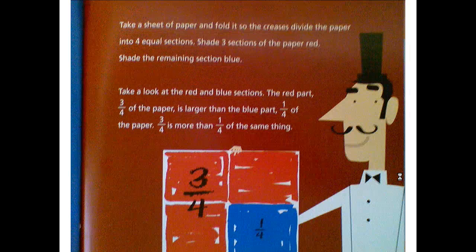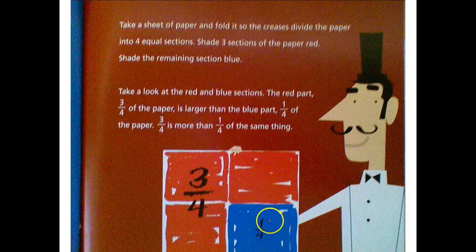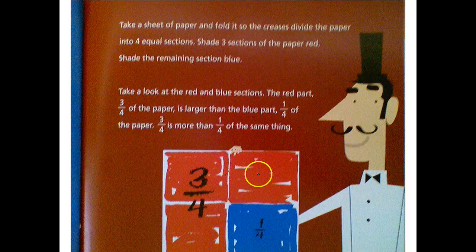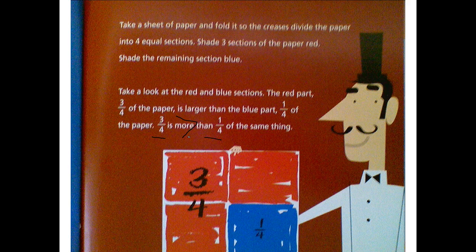We can also take another sheet of paper and color three of the four sections red, and color one of the fourths blue. If you take a look at the red and blue sections, the red part, three-fourths, is larger than the blue part, one-fourth. You can see the denominator's the same — we have a four here and a four here. Three pieces is greater than one piece of that same size whole. So three-fourths is greater than one-fourth.